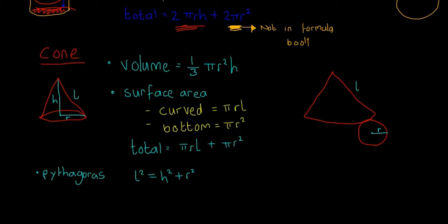To find l, they might give you the height and the radius, or any two of the three values. To find the missing one, you can use Pythagoras because there's a right-angled triangle: the radius along the bottom, the height going straight up to the middle, and l as the diagonal. That's also the net of a cone, which looks a little bit unusual.